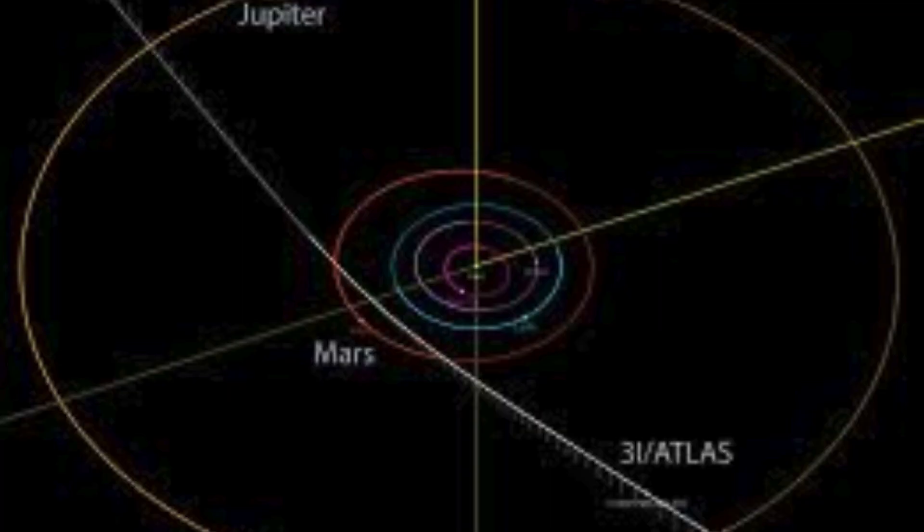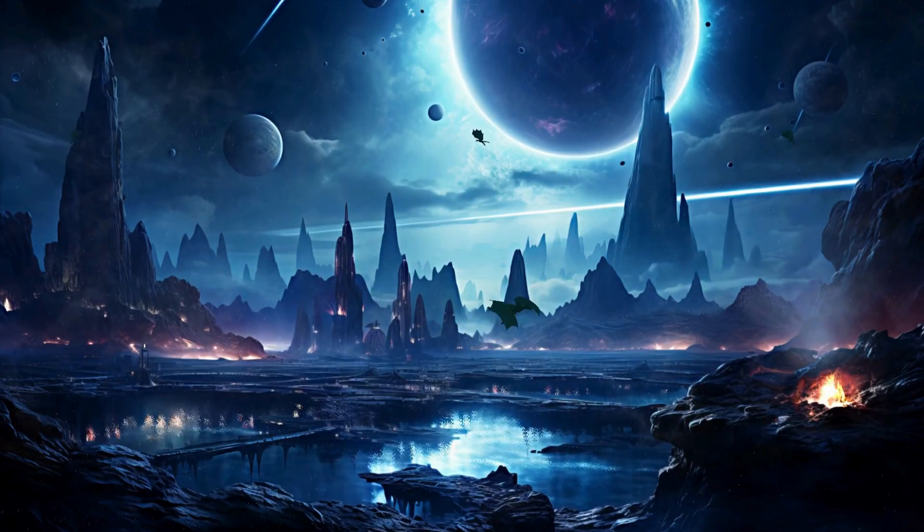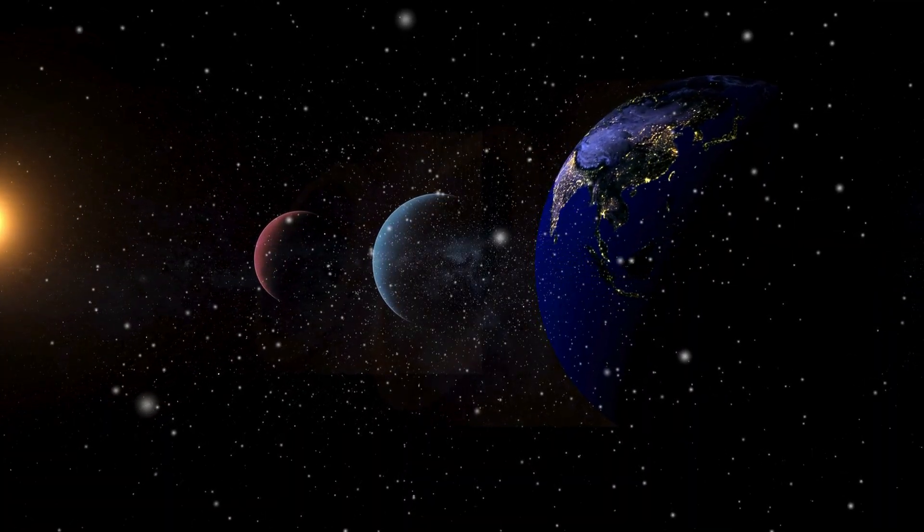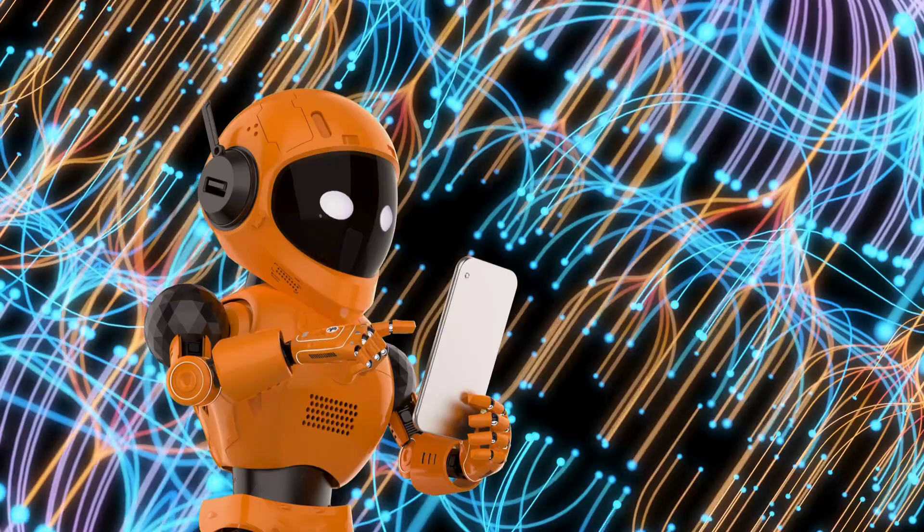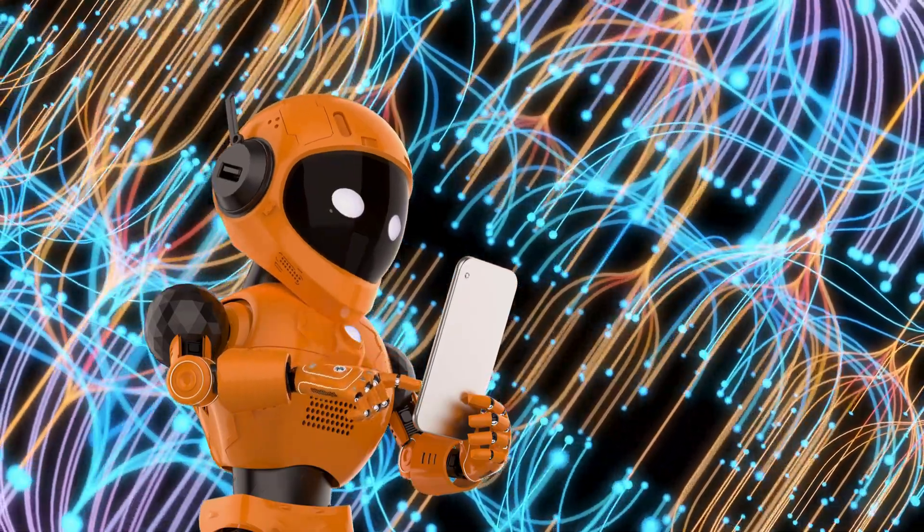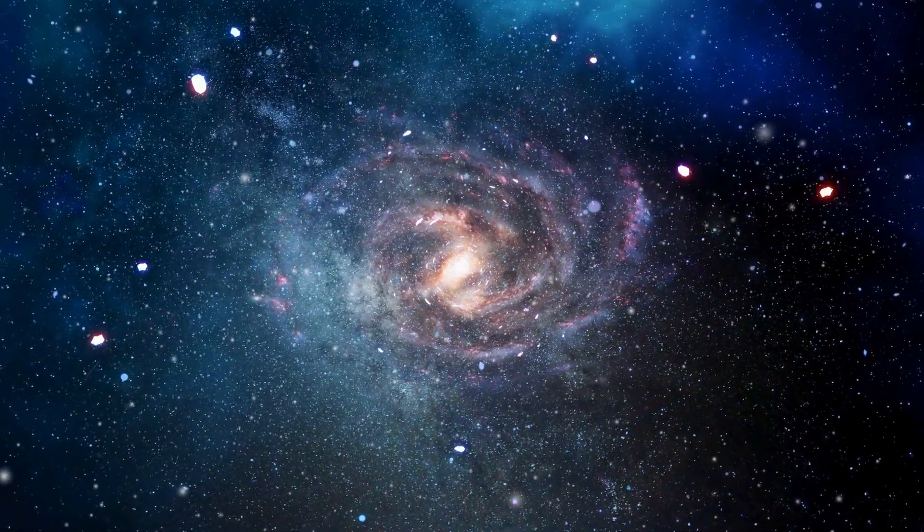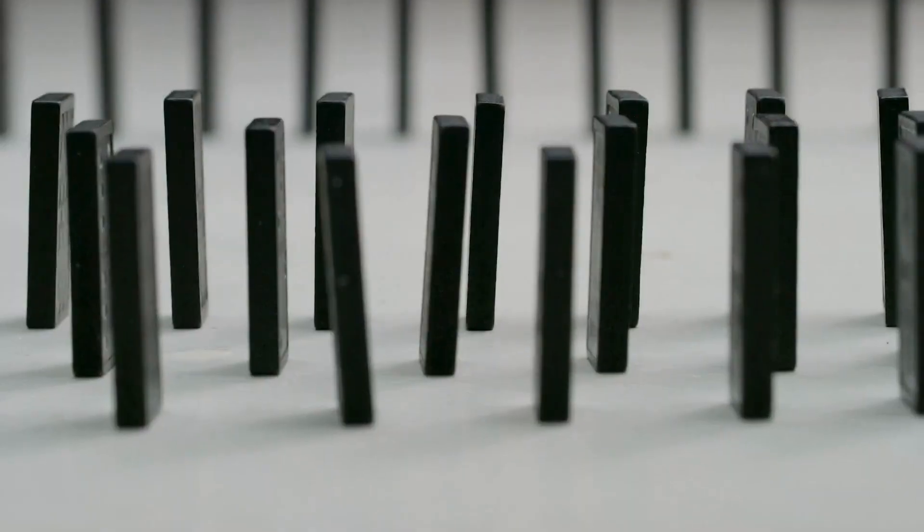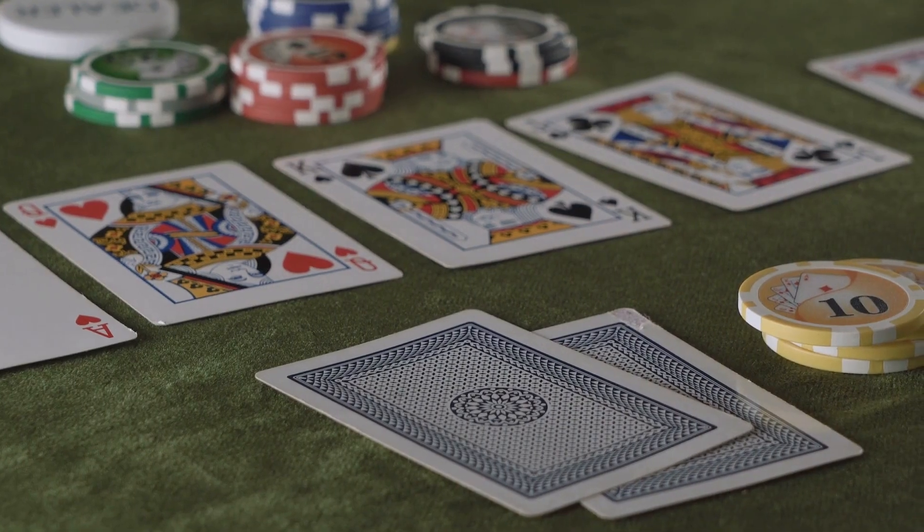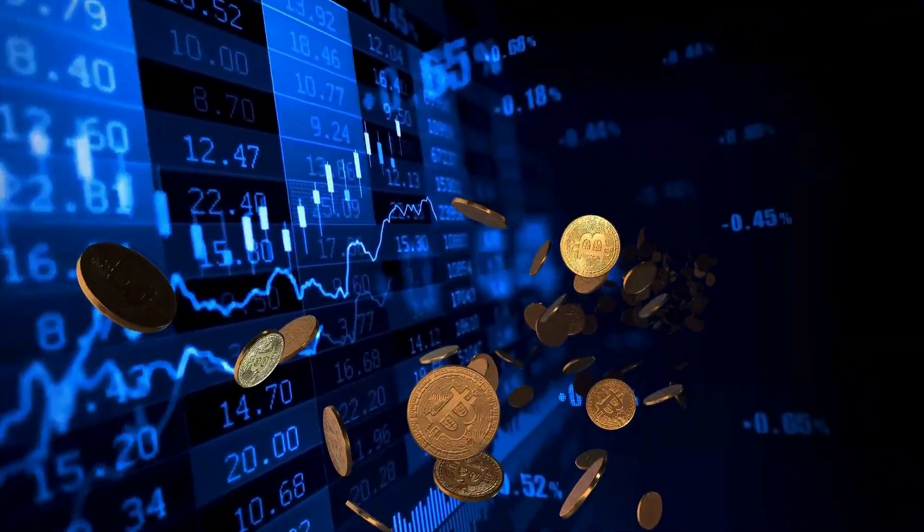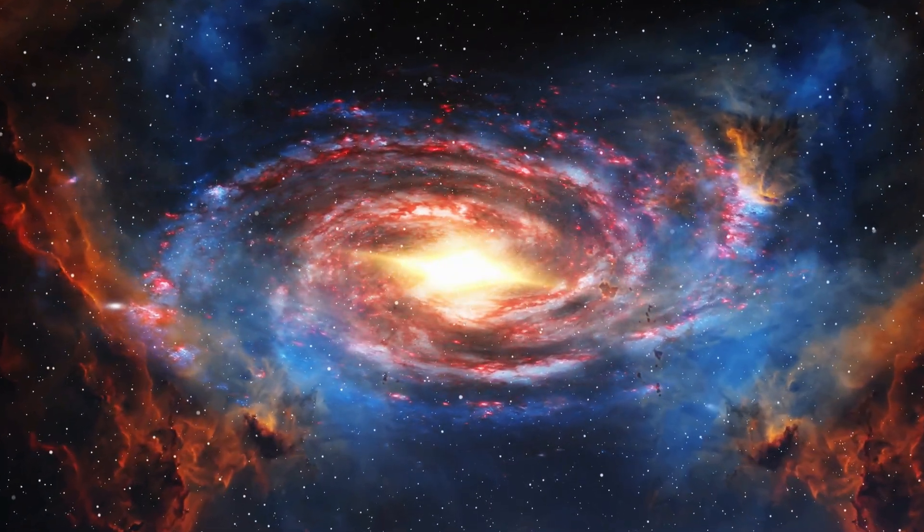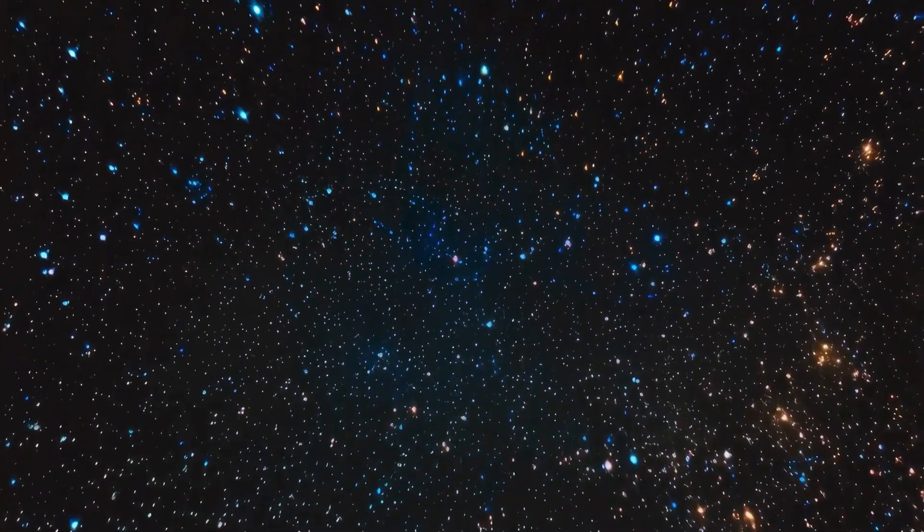Interstellar objects like 3i-ATLAS are fossilized scraps from alien planet formation, remnants ejected during the chaotic youth of other solar systems, when giant planets like our Jupiter bulldoze smaller bodies into exile. Models predicted these exiles would mostly be tiny shards, dust bunny fragments outnumbered a million to one by the big boys. Spotting three-kilometer-scale giants in a row? That's like drawing three royal flushes in poker on your first three hands. Statistically improbable, unless our assumptions are off.